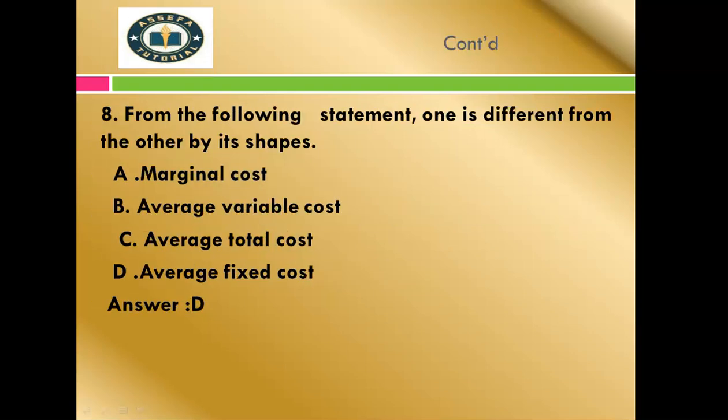Question number eight: From the following statements, one is different from the others — in microeconomics. Options: A) Marginal cost, B) Average variable cost, C) Average total cost, D) Average fixed cost. The correct answer for this question is D.